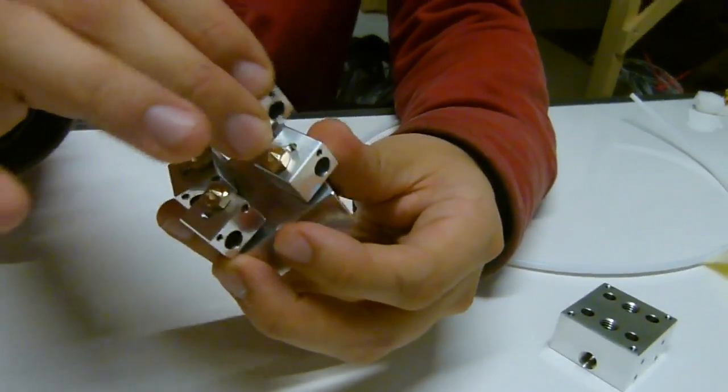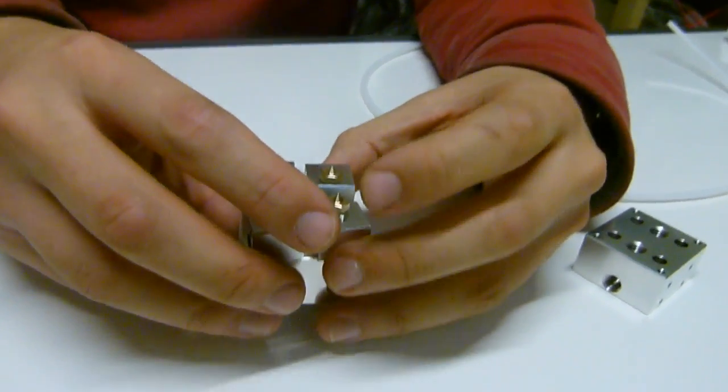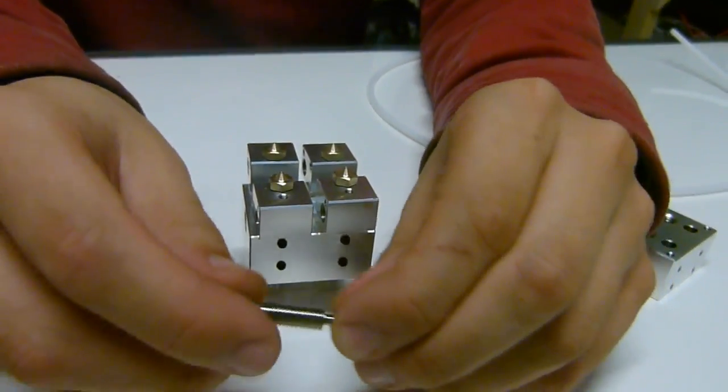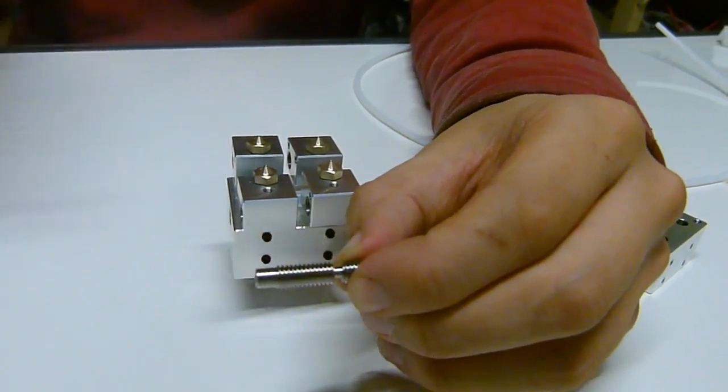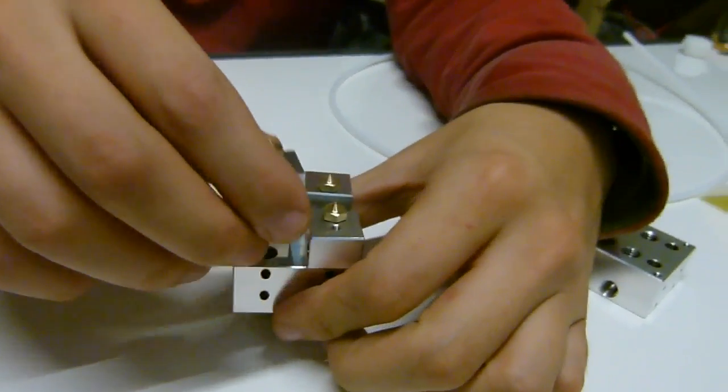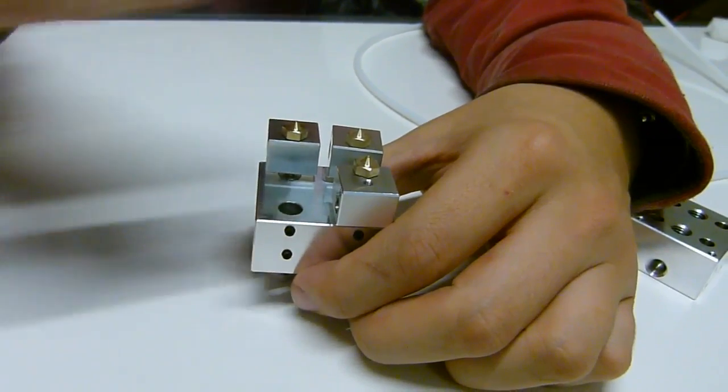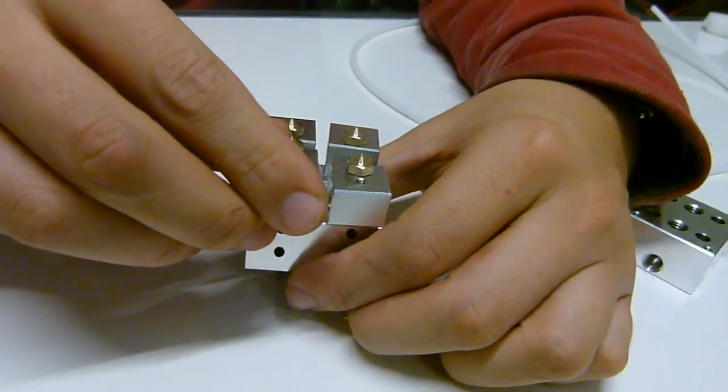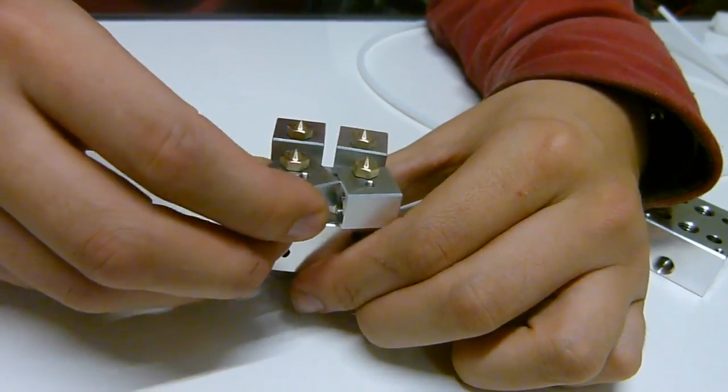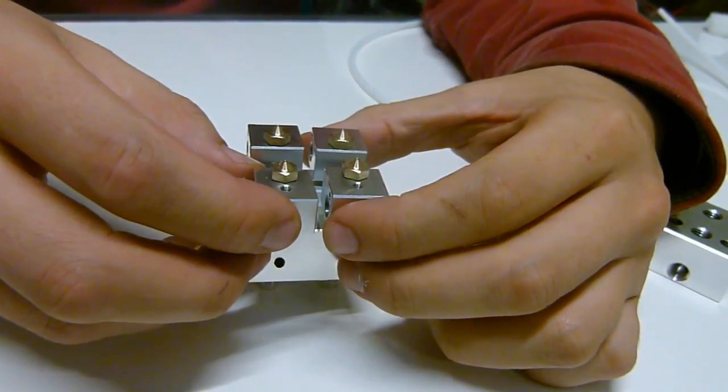Unlike the E3D V5 heat brakes which look like this with threads on them, a Kraken heat brake is smooth, and that's really key. It allows us to get them packed really tightly, because if they had to screw in you wouldn't be able to get them together so tightly. So it allows them to get very close.